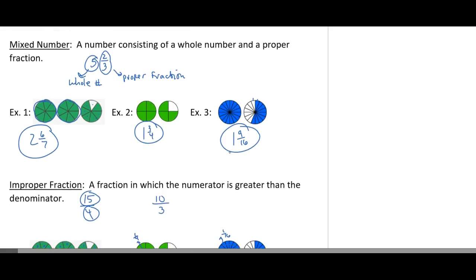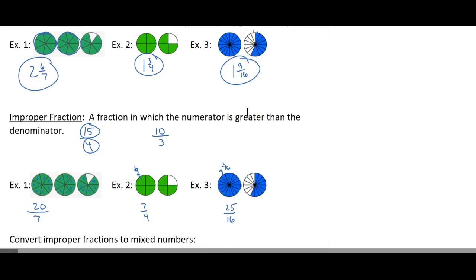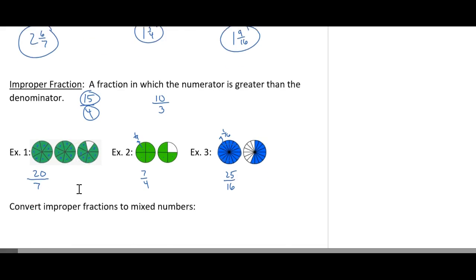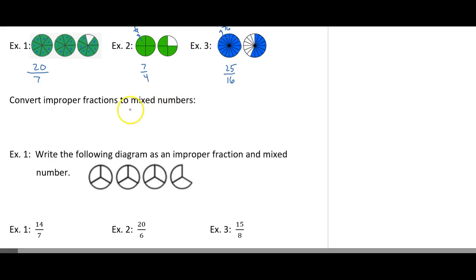So if you look at the diagrams here for the mixed number and the improper fraction, what you notice is they're the same. But we can represent these diagrams as a mixed number or an improper fraction. A lot of times there are advantages to using the improper fraction versus the mixed number, and other times there's an advantage using the mixed number. It's very important to be able to convert from one to another.